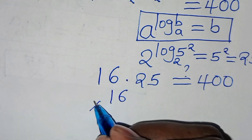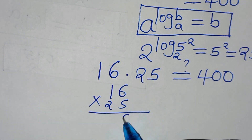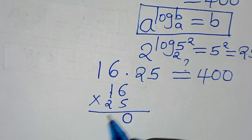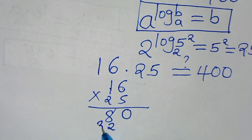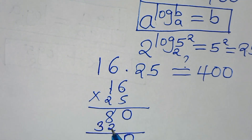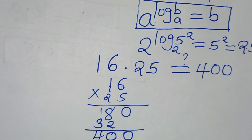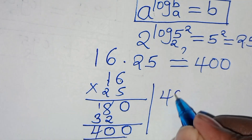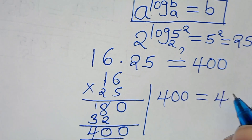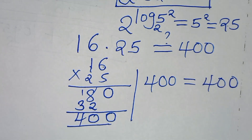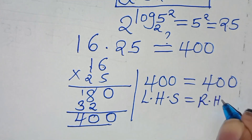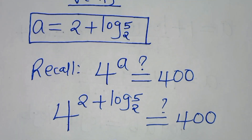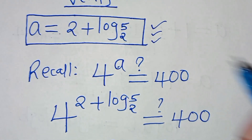Computing 16 times 25: 6 times 5 is 30, carry 3; 1 times 5 plus 3 is 8; 6 times 2 is 12, carry 1; 1 times 2 plus 1 is 3; giving 400. So 400 equals 400, meaning the left-hand side equals the right-hand side. This confirms that the value of a equals 2 plus log 5 to base 2 actually satisfies the equation.